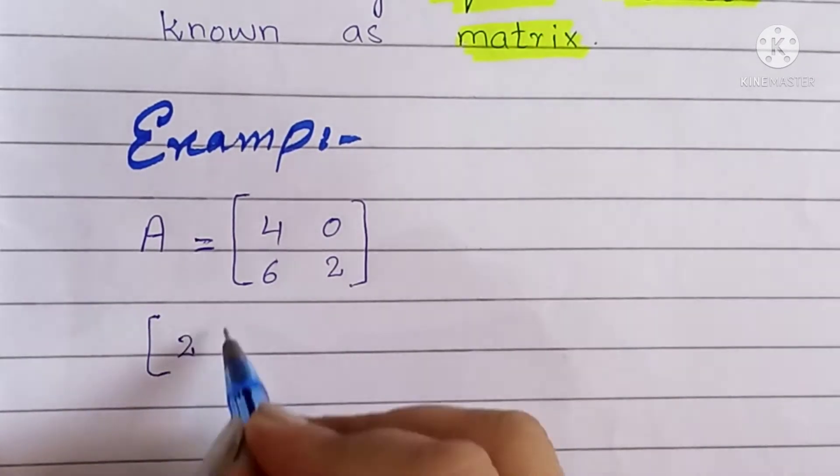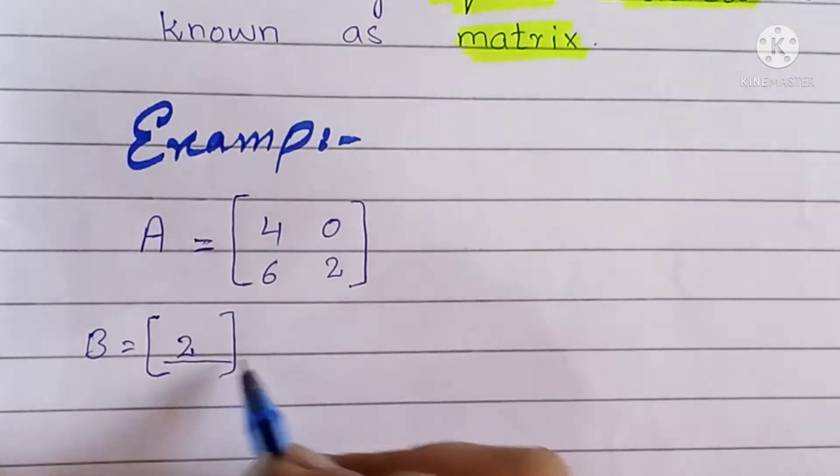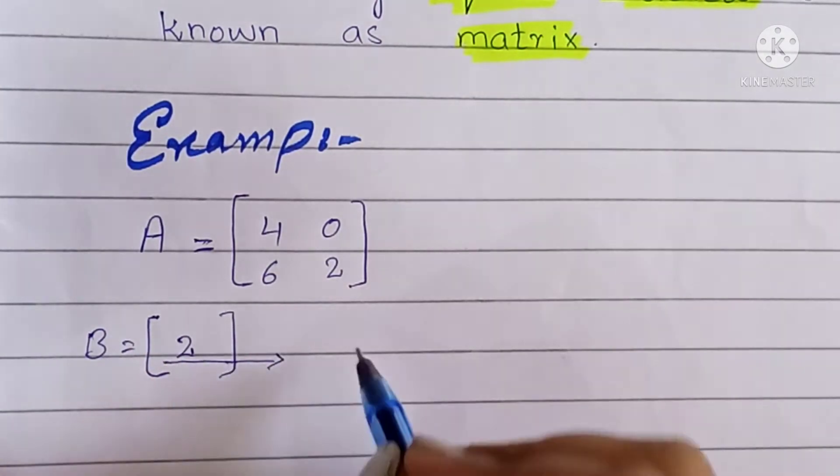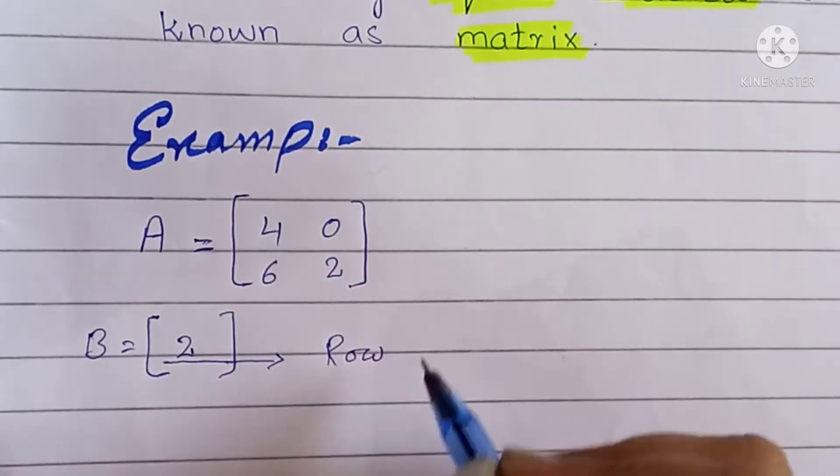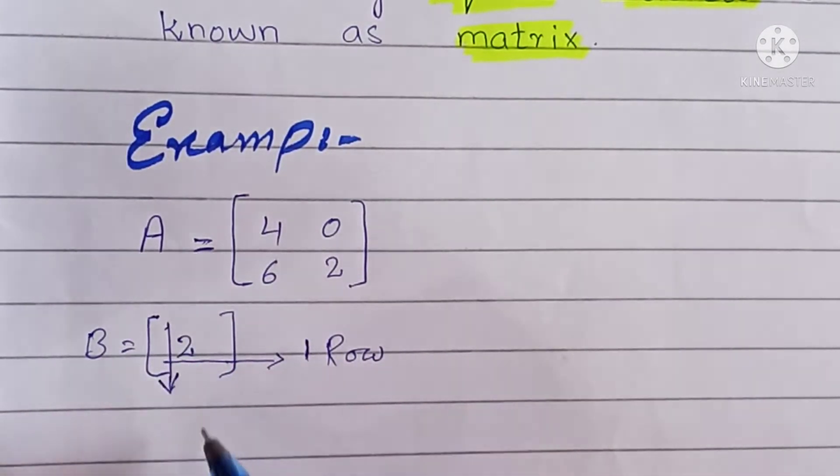Now we have another matrix B. Let's see its rows and columns. Its row is just two, one entry, one row and also just one column.